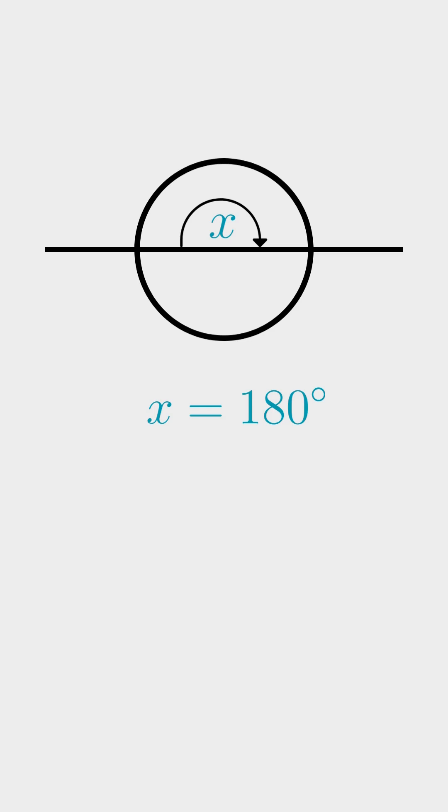We start off with the assumption that a full rotation, or a circle, is 360 degrees. When you bisect the circle with a straight line, it results in an angle of 180 degrees, which is half of 360.